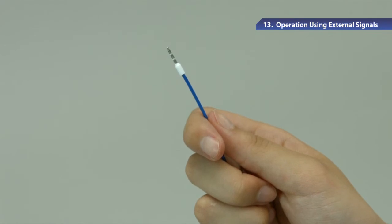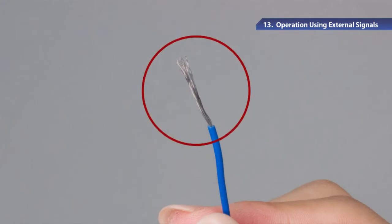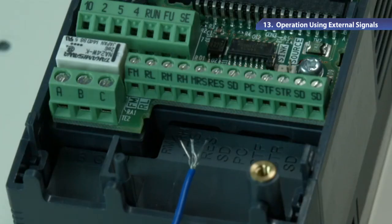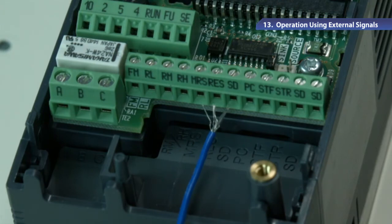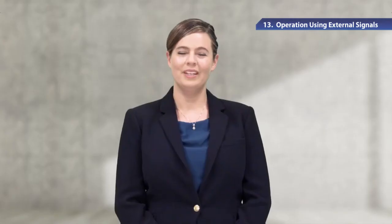For the control circuit wiring, blade terminals are recommended. If you want to use the stripped electric wires, twist the electric wires before wiring so they won't become loose. Loose tips may cause a short circuit with other terminals. Do not solder it to prevent it from getting bent.